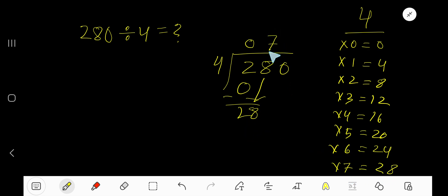7 times. 7 times 4 is 28. Subtract to get 0. Now we have here one more 0. 4 goes into 0 how many times? 0 times, right? 0 times 4 is 0.